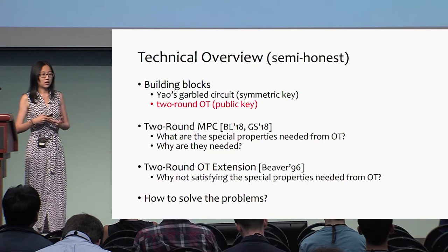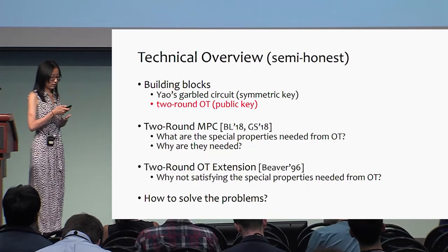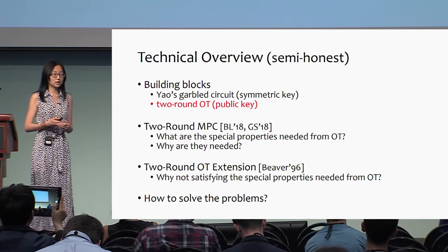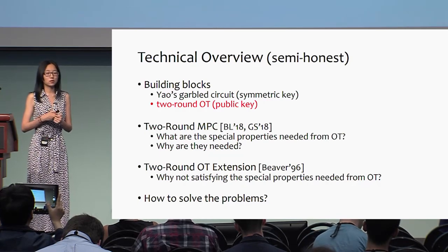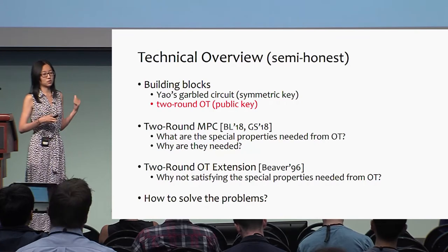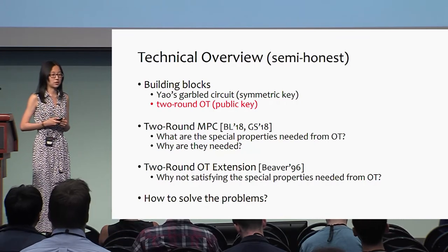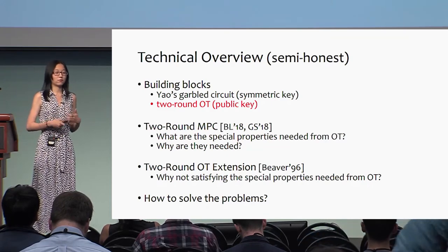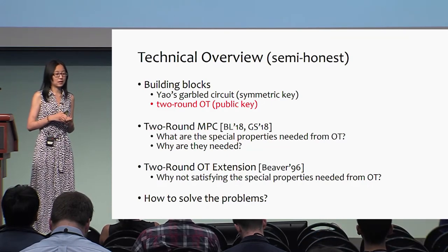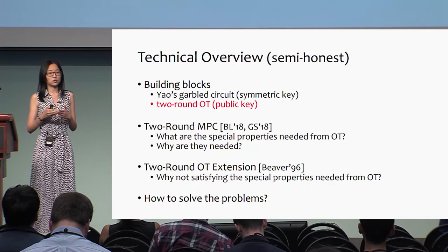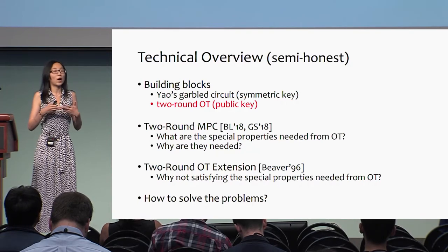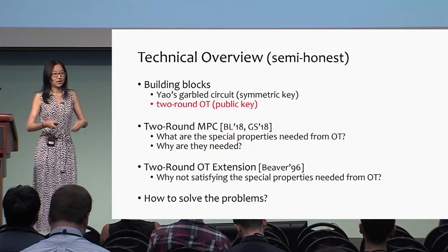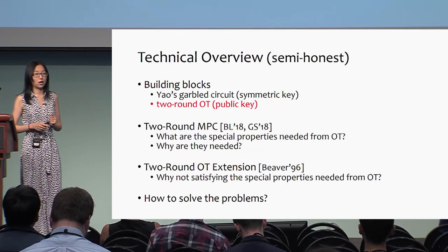In the rest of the talk, I will tell you what are these special properties, why they're needed for MPC, why they're not satisfied in two-round OT extension, and how we're going to solve it. First, I will define two building blocks: Yao's garbled circuit and two-round oblivious transfer — the only place we need public key operations. Then I'll explain the special properties, how OT extension works and why it doesn't satisfy them, and finally how we solve the problem.